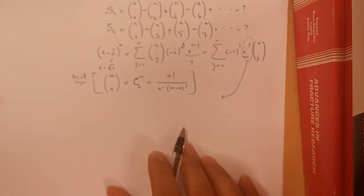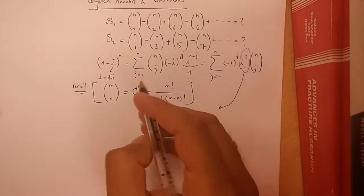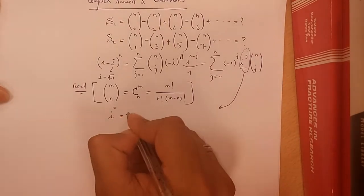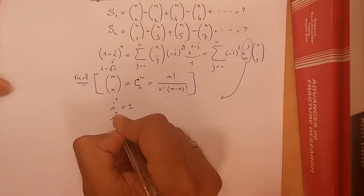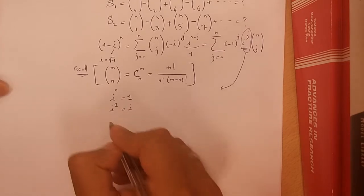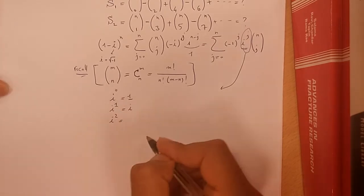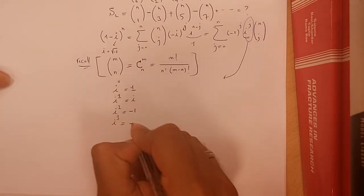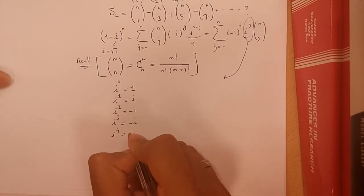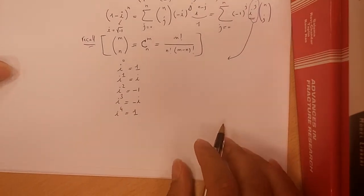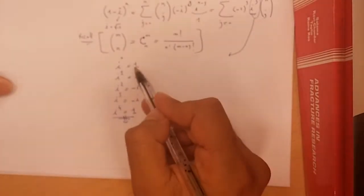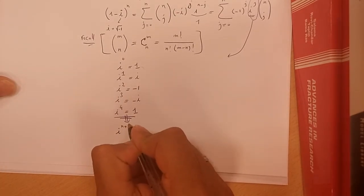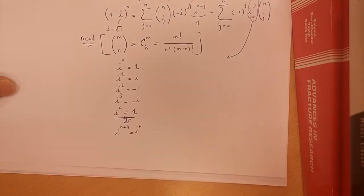What happens when we raise i to different natural powers? i^0 = 1, i^1 = i, i^2 = -1, i^3 = -i, and i^4 = 1. So there is a period of 4, and we observe that i^(N+4) = i^N.